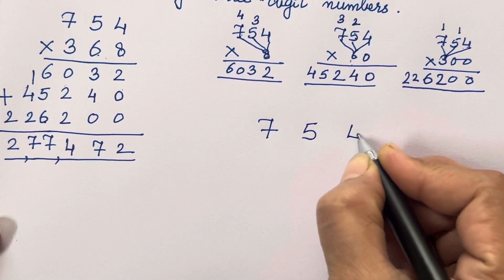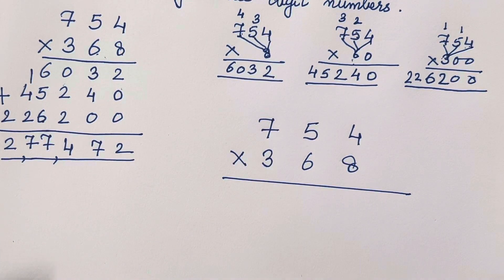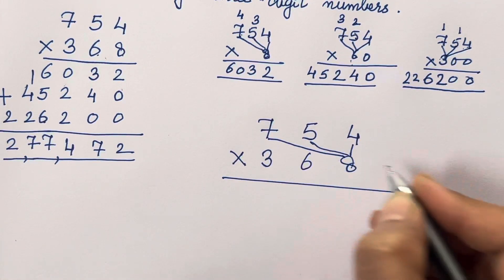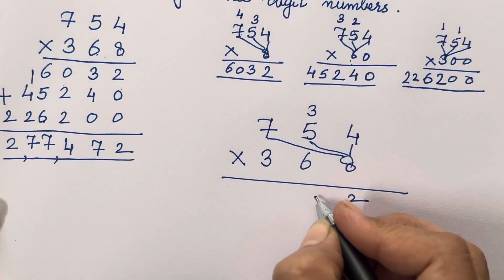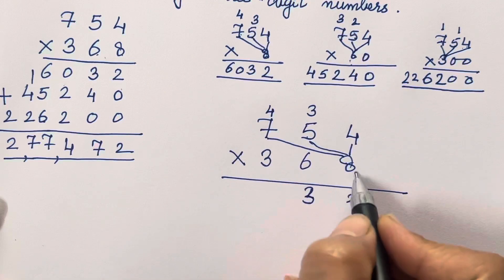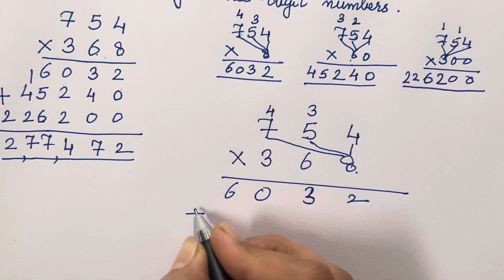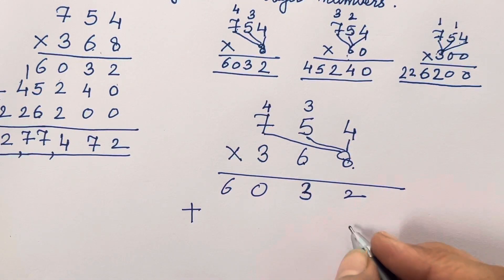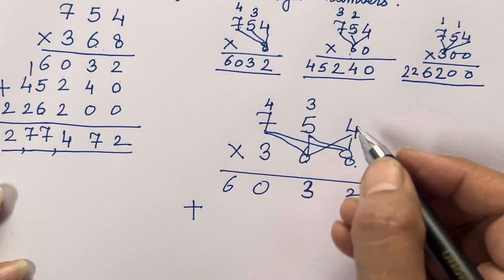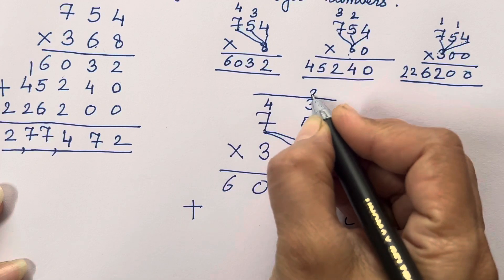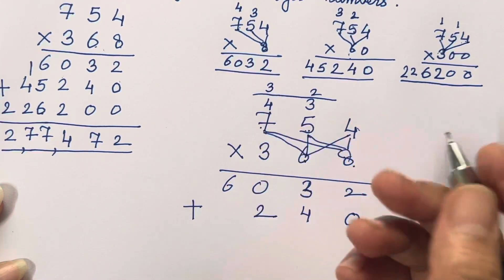Many of you will find whichever step is easy — you can use either method. Both steps will give you the same answer. So first multiply by 8: 4 × 8 = 32, 5 × 8 = 40, plus 3 = 43, 7 × 8 = 56, plus 4 = 60. I am writing all numbers just below one another. Next, take one zero first, then multiply by 6: 6 × 4 = 24, 6 × 5 = 30, plus 2 = 32, 6 × 7 = 42, plus 3 = 45.